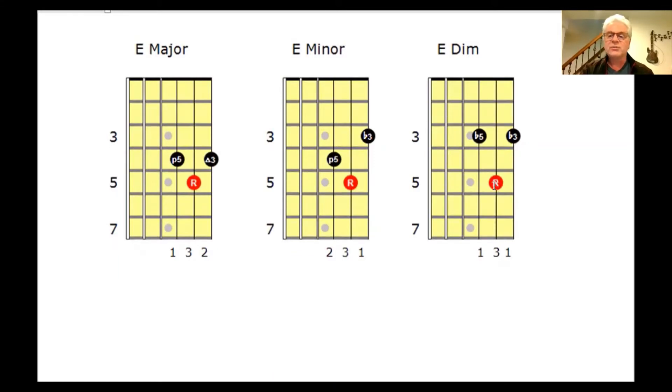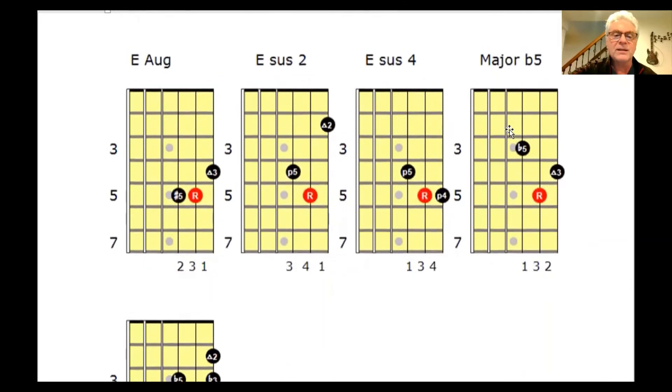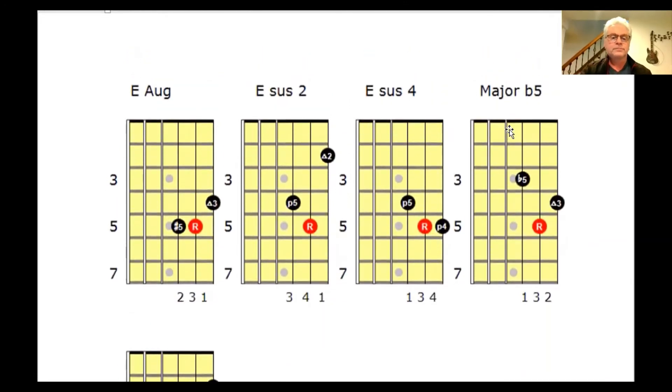Our E diminished: we have the flat five, we have the one and the flat three. We could use our fingers one, three, one. We could bar our first finger over that. The next one is E augmented. We start with a sharp five, our root, and our third. Two, three, one.